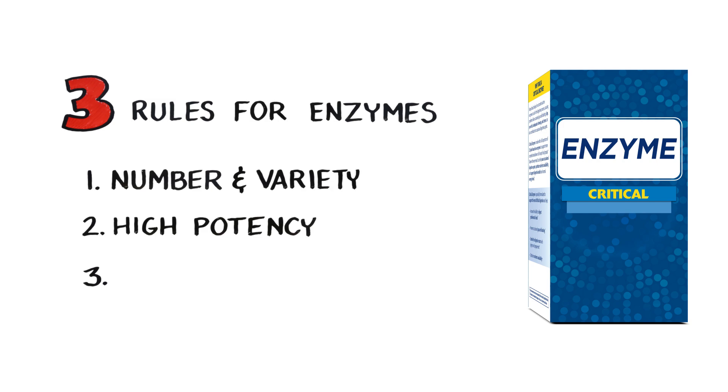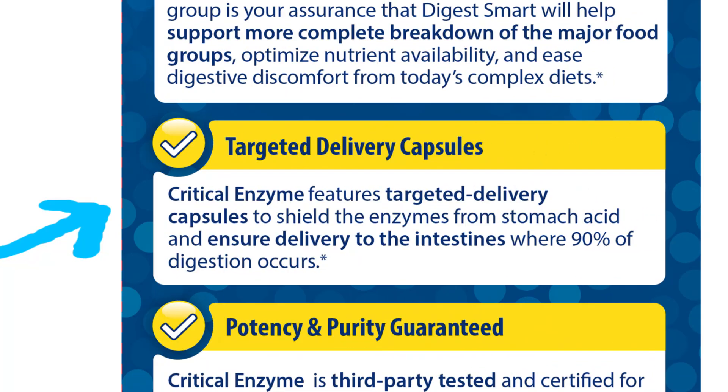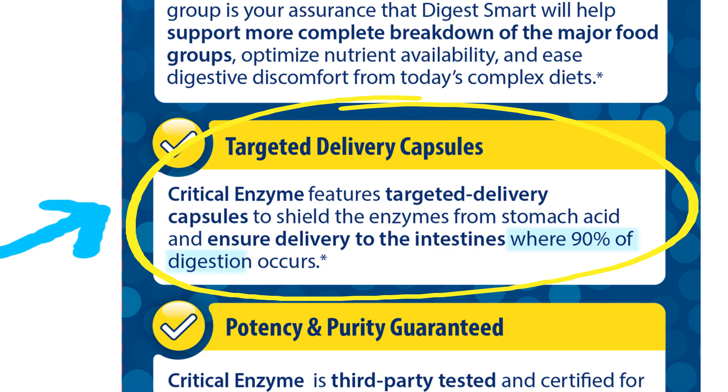And the third rule is to look for an enzyme with a targeted delivery capsule. This type of capsule will help deliver the enzymes, pass harsh stomach acid, and directly into the intestines, where 90% of digestion occurs.